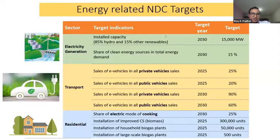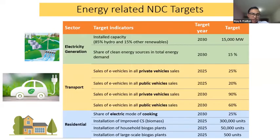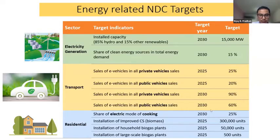The table here shows the energy-related NDC targets. The NDC target is mainly focused on increasing the installed capacity of hydro and other renewables by 2030, also increasing the sales of electric vehicles, and in the residential sector, increasing the electric mode of cooking, installation of improved cookstoves, and biogas plants.